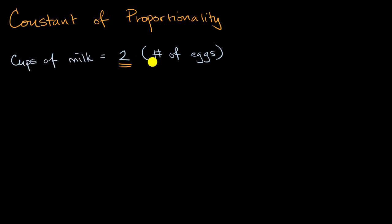And we can see how this is a proportional relationship a little bit clearer if we set up a table. So if we say number of eggs, and if we say cups of milk, and make a table here, well if you have one egg, how many cups of milk are you going to have? Well this would be one times two, you're going to have two cups of milk.